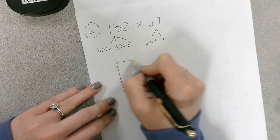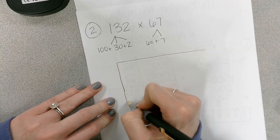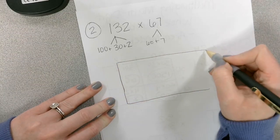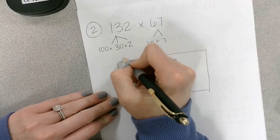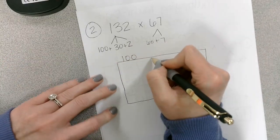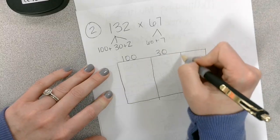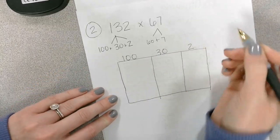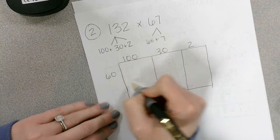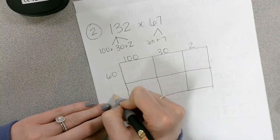And this is 60 plus 7. So now we have our area model. And I'm going to make my area model a little bit longer this time because I have three digits on the top. 100, 30, 2. And we have 60 and 7.